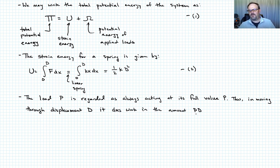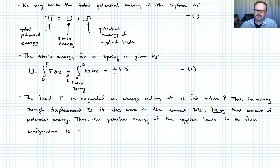So if it does that, that means that it loses that amount of potential energy. So the potential energy, then, of the applied loads in the final configuration is given as follows. It's going to look like omega is equal to now negative P times D. It's called that equation three. Because that's how much it lost as it moved through D.